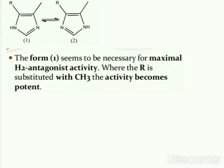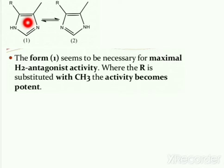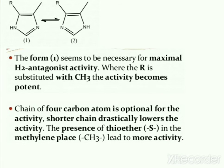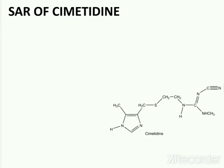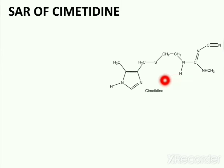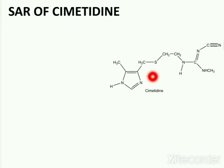Of the two tautomeric forms, the first tautomer seems to be necessary for maximal H2 antagonist activity. Where R is substituted with a CH3 group, the activity becomes potent. This is seen in the structure of cimetidine, which contains CH3 at the R group, making it a potent compound.